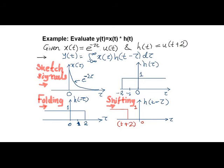We start with writing a formula of convolution integral as y equals to integral from minus infinity to plus infinity, x of tau, h of t minus tau, d tau.